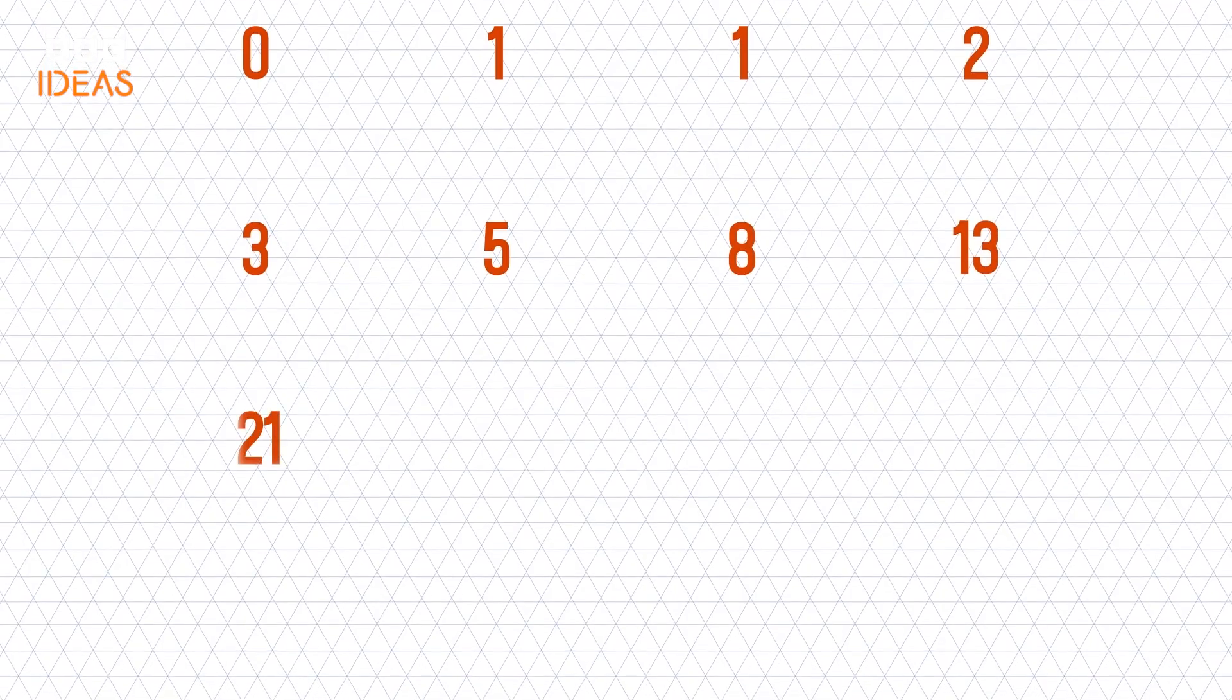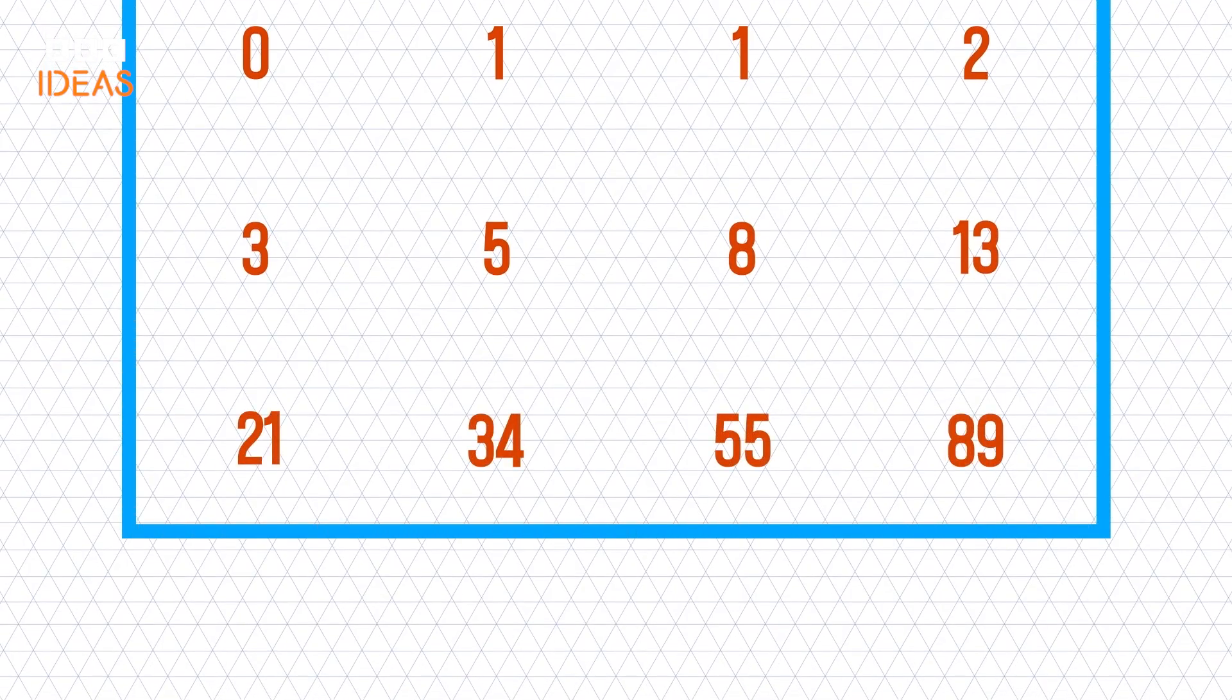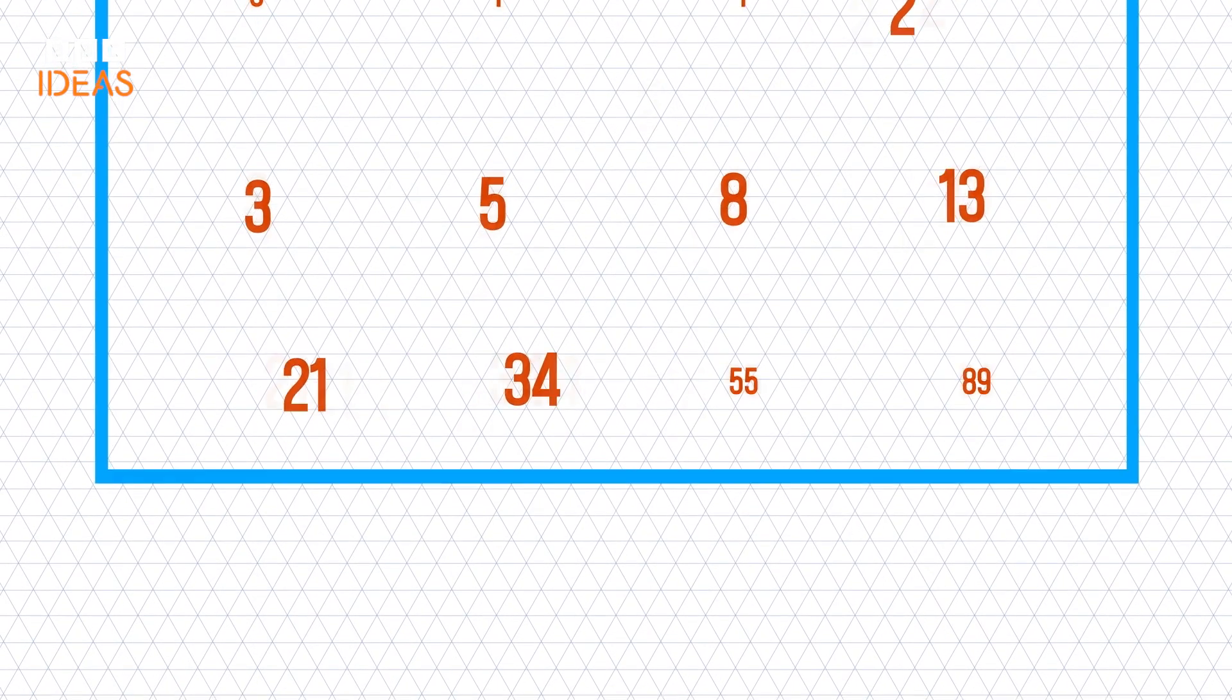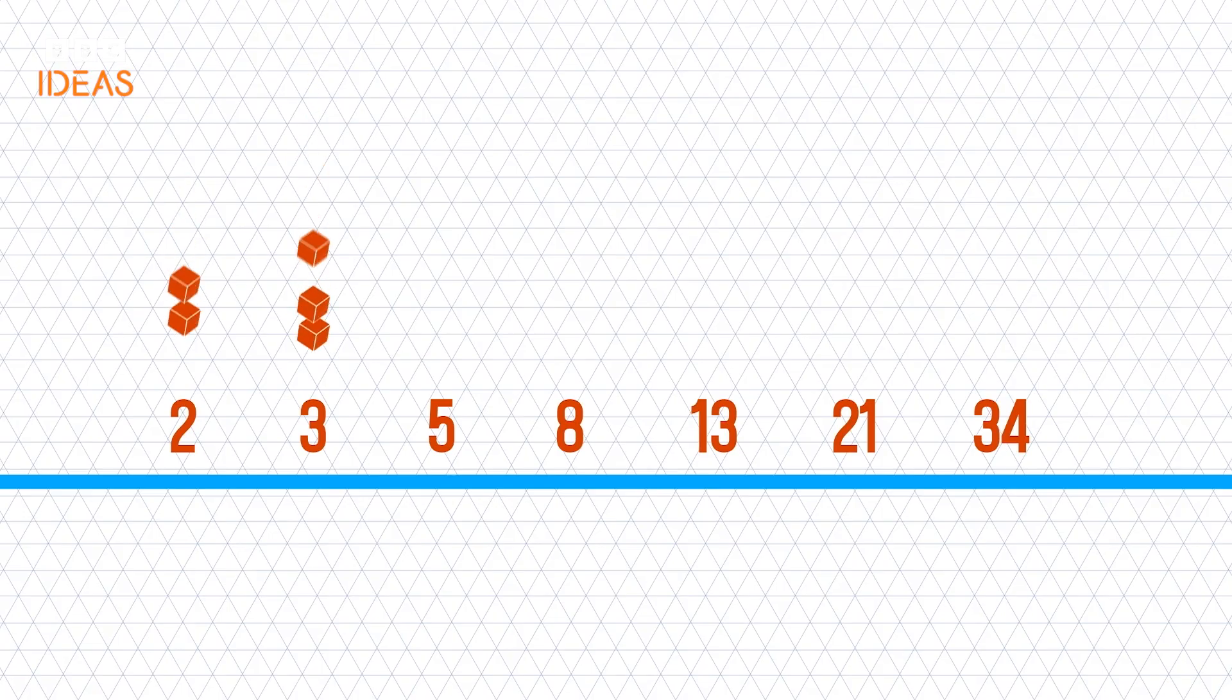It goes something like this. In this sequence, each new number is the sum of the previous two. So the first and second numbers add up to the third, the third and the fourth add up to the fifth, and so on.